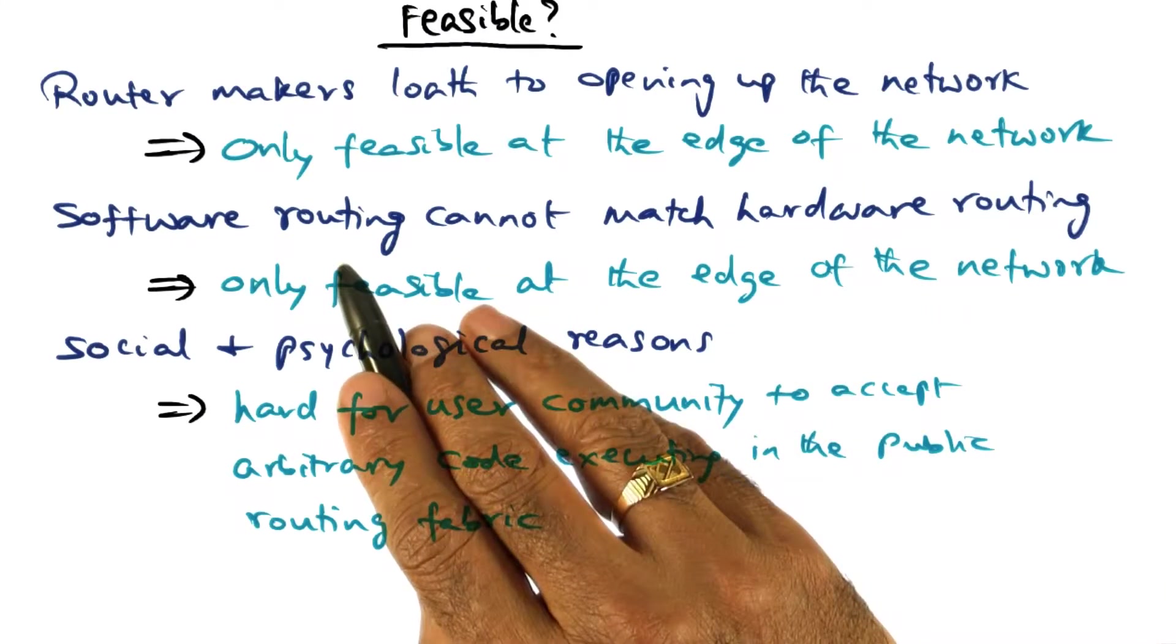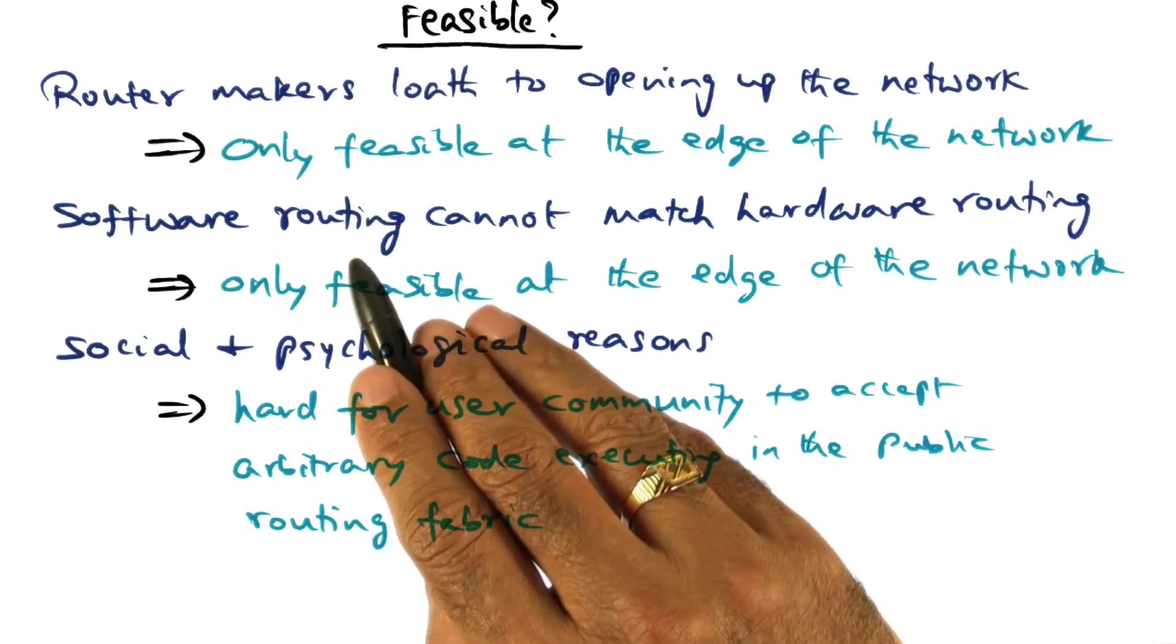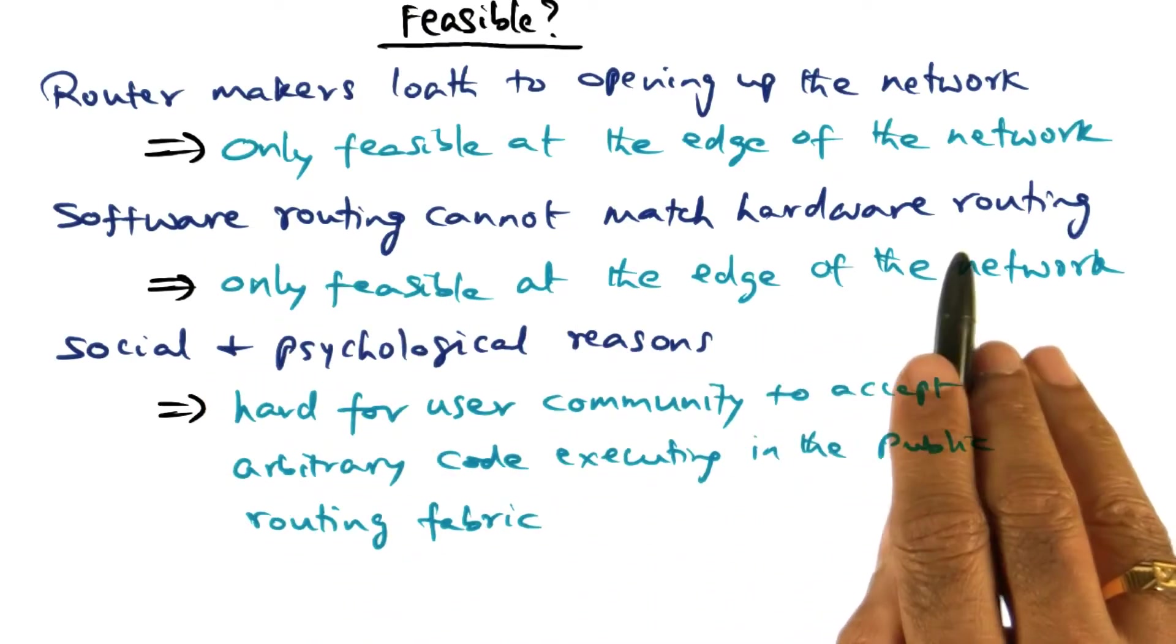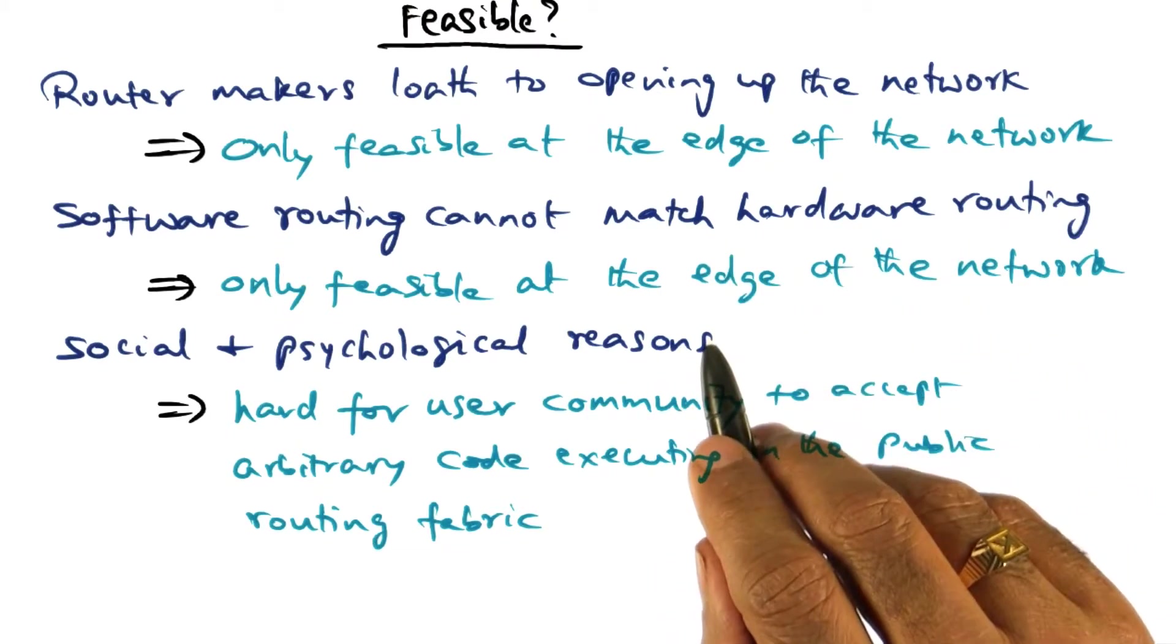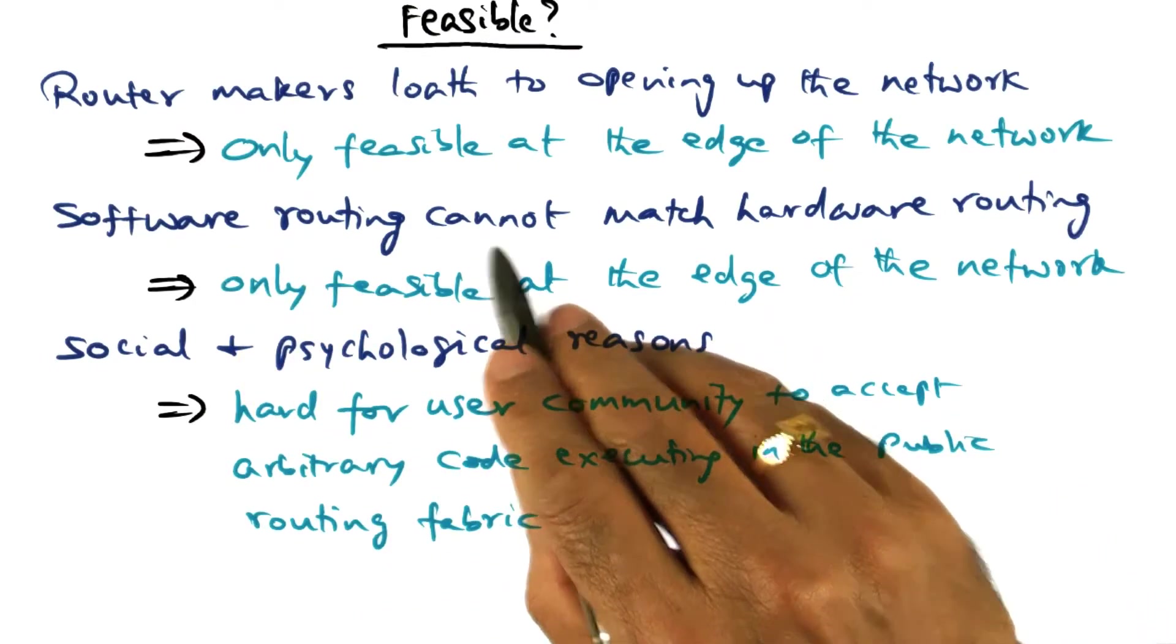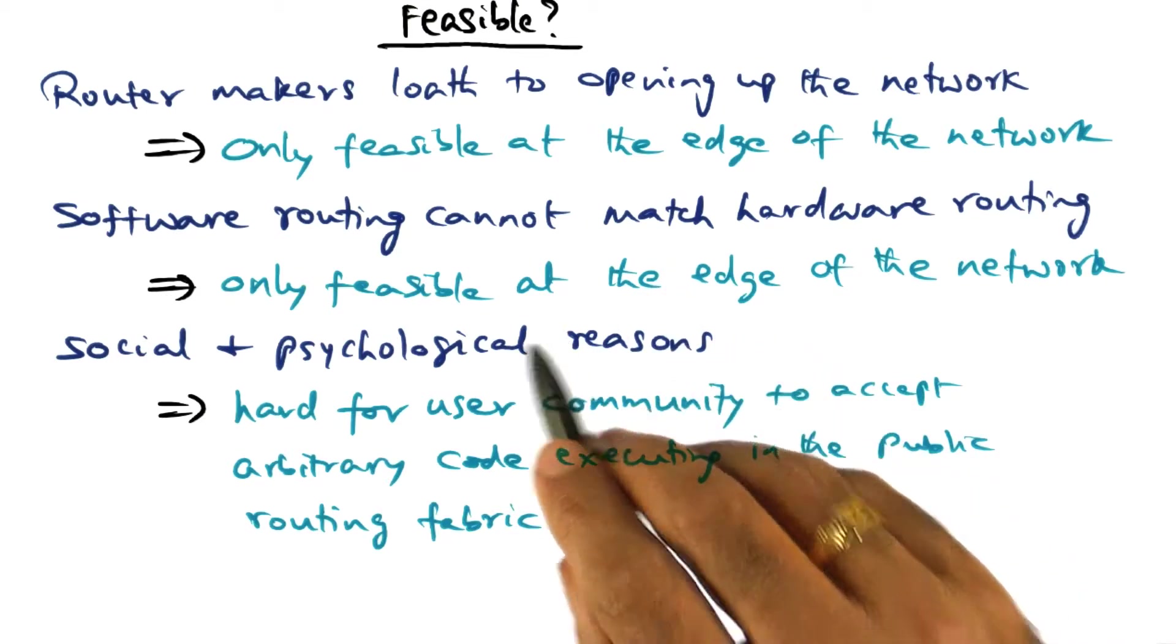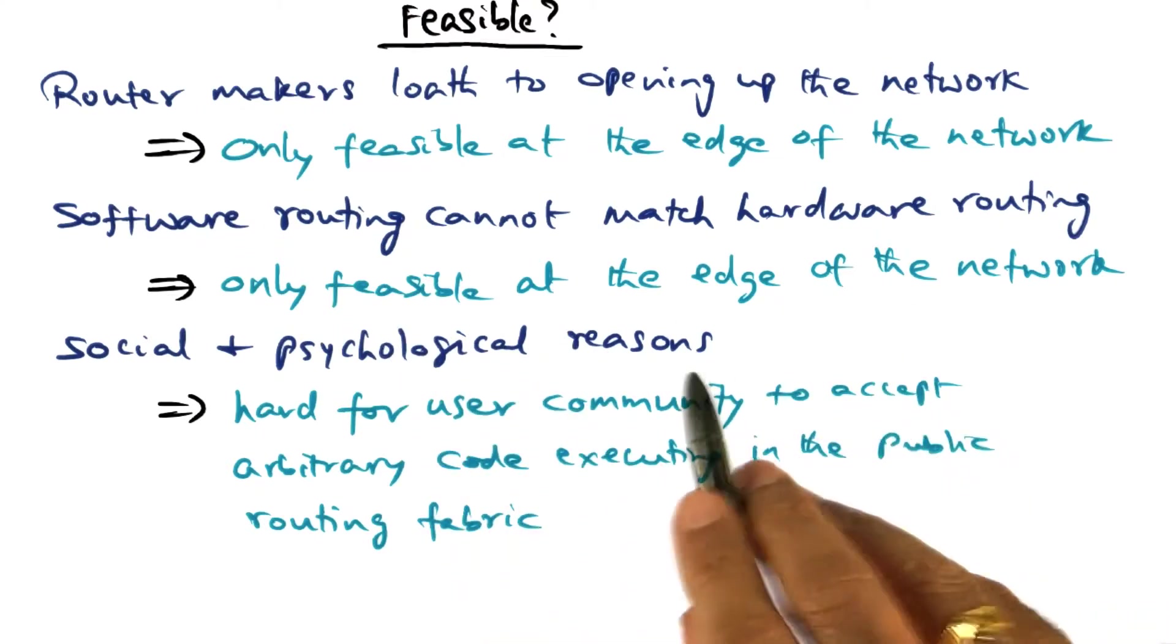Secondly, when we're using active networks, we are talking about executing code in a router to determine the routing decision at that node. In other words, we're doing software routing. Software routing cannot match hardware routing because at the core of the network, there's so much traffic being handled that you really want to do this in hardware. Doing this at software speeds is not going to match the hardware speed of packet processing in the core of the network. So once again, this argues that active networks is only feasible at the edge of the network.